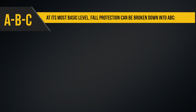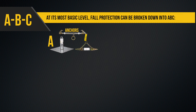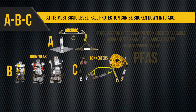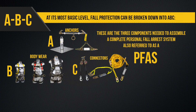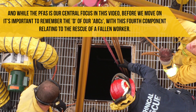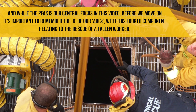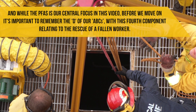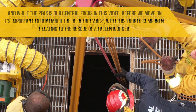At its most basic level, fall protection can be broken down into ABC: Anchors, body wear, and connectors. These are the three components needed to assemble a complete personal fall arrest system, also referred to as a PFAS. While the PFAS is our central focus in this video, it's important to remember the D of our ABCs — this fourth component relating to the rescue of a fallen worker.